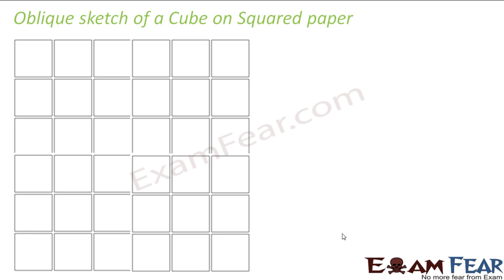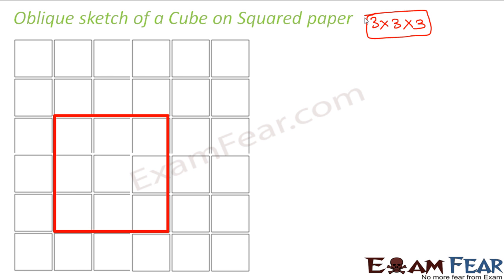Let us take this example to make ideas clearer. Say we want to draw a cube of dimension 3 by 3 by 3, meaning each side is 3 centimetres. What we do is we first draw a square such that each side covers 3 boxes on the squared paper — this side covers 3 boxes and this side also covers 3 boxes — so you know both sides are equal. These squares help you confirm that 3 squares this side and 3 squares this side, so you know the two sides are equal.